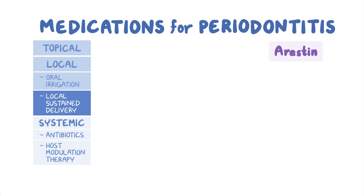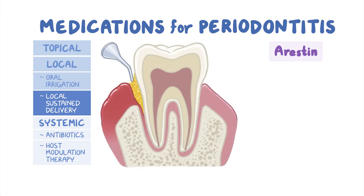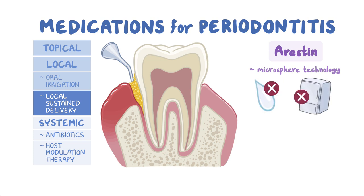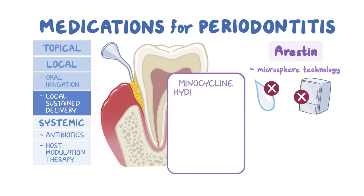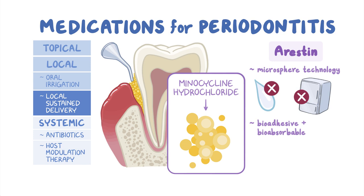Moving on to arestin. This is a locally delivered antibiotic based on a biodegradable microsphere technology, which is generally easy to use because it does not require reconstitution or refrigeration. In arestin, minocycline hydrochloride is incorporated into a bioadhesive and bioabsorbable polymer called PGLA. Just like atrodox, arestin is administered via syringe into subgingival spaces, but the MIC-90 is even lower.